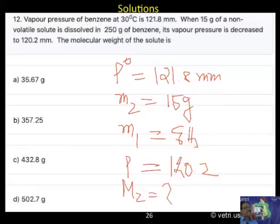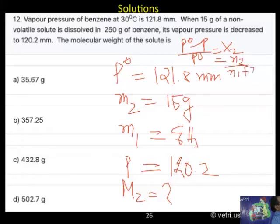Please follow. This is the way you have to apply. What equation do we have to use? P0 minus P by P0 equal to X2. The X2 equals N2 by N1 plus N2.